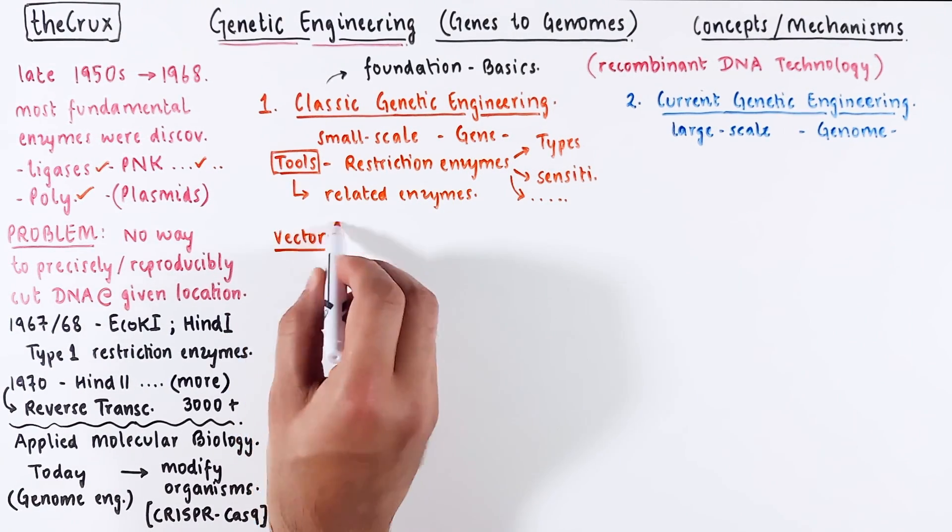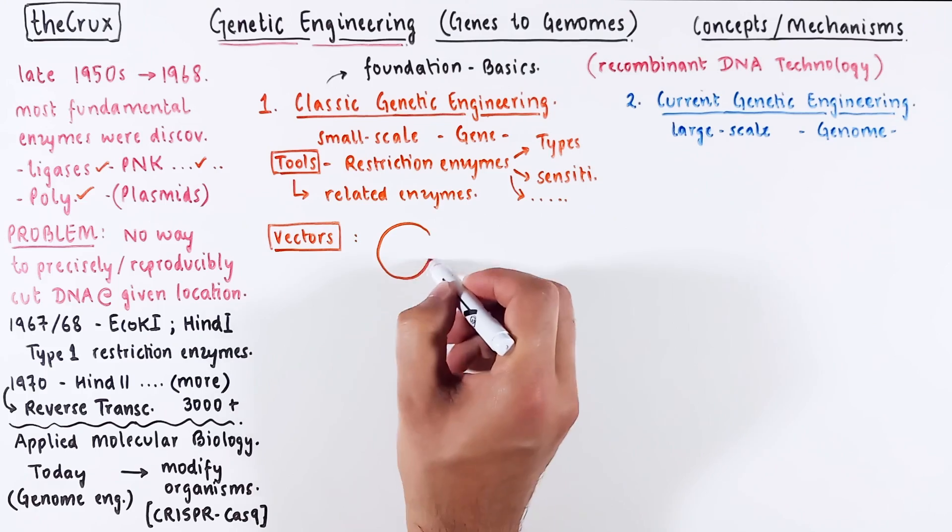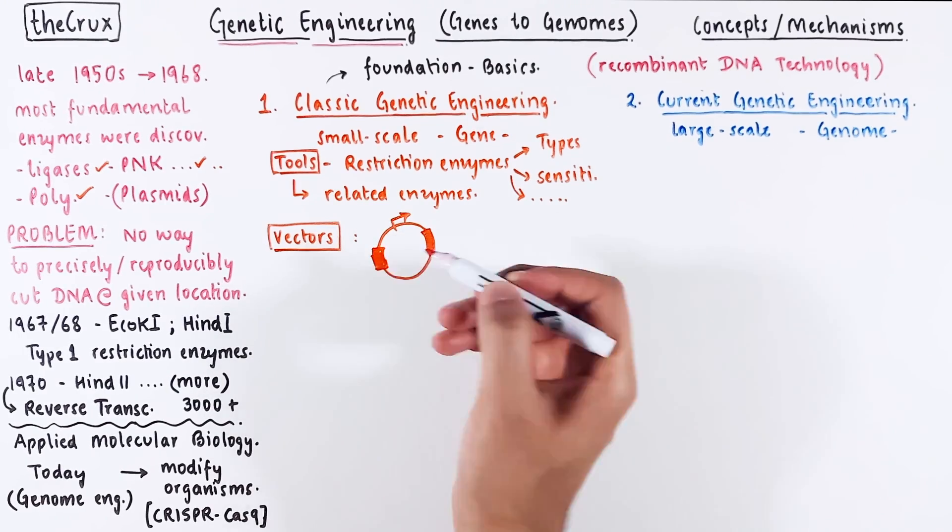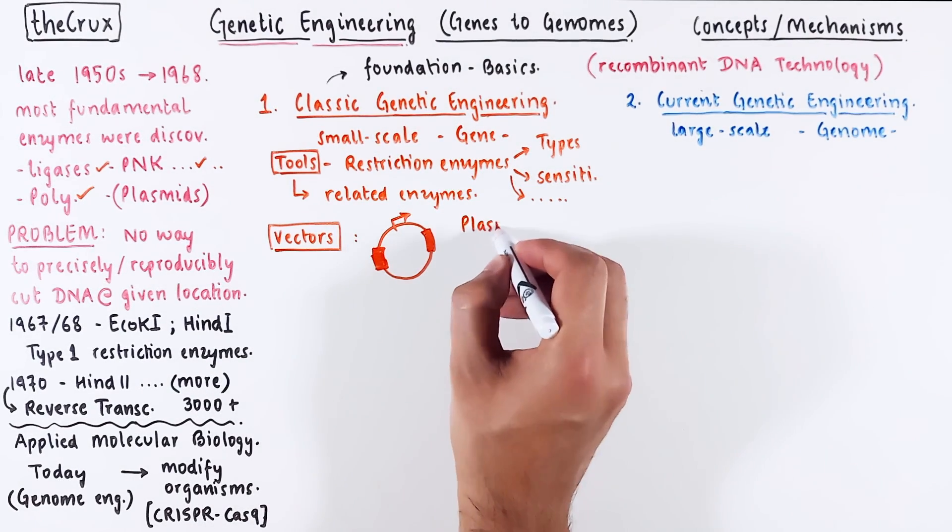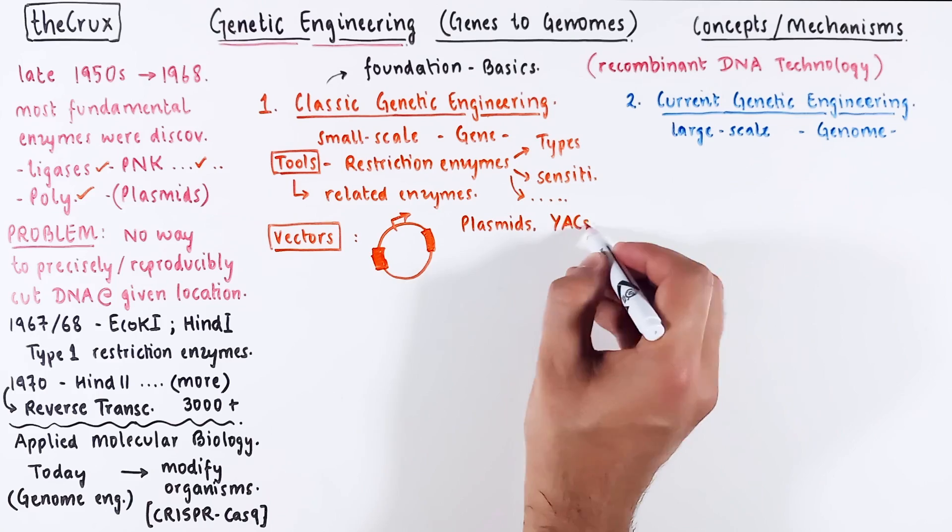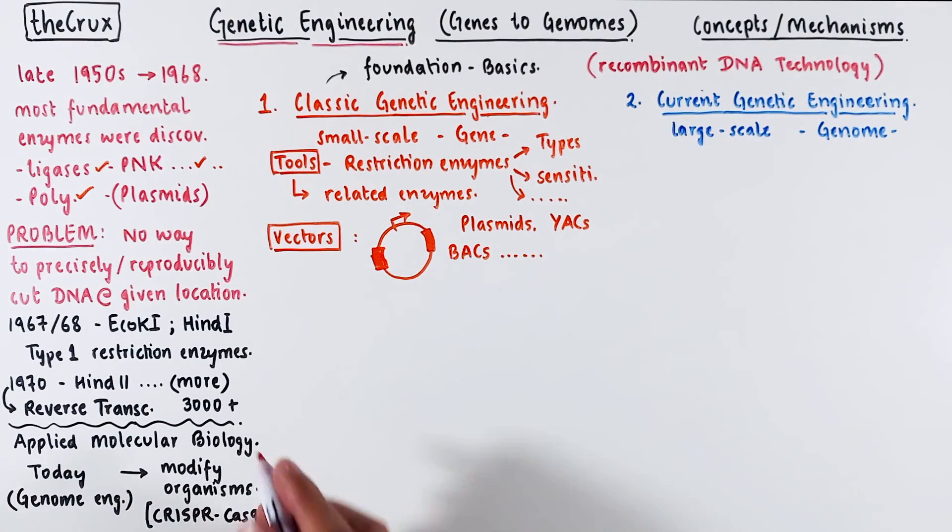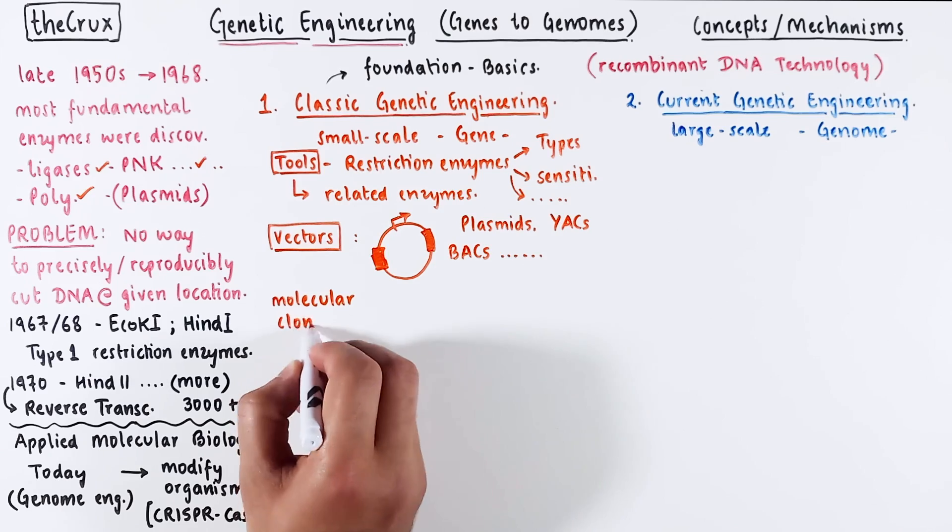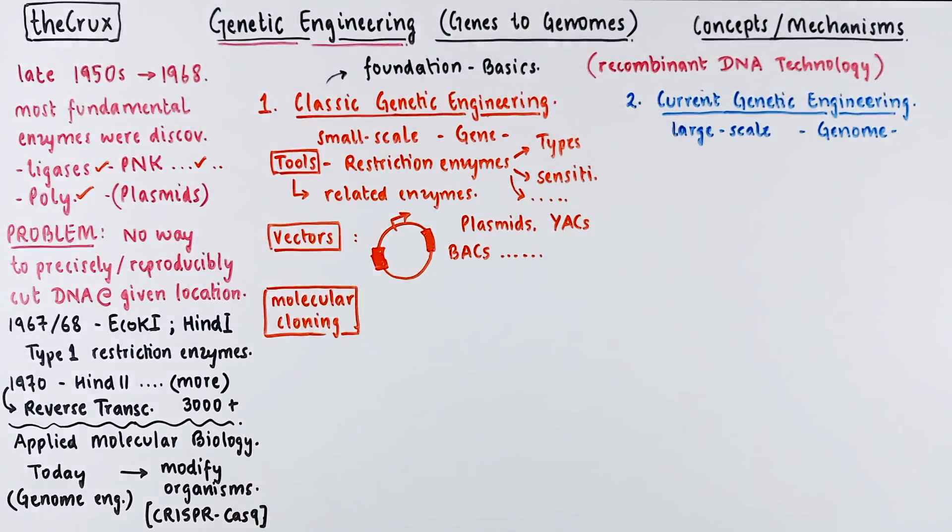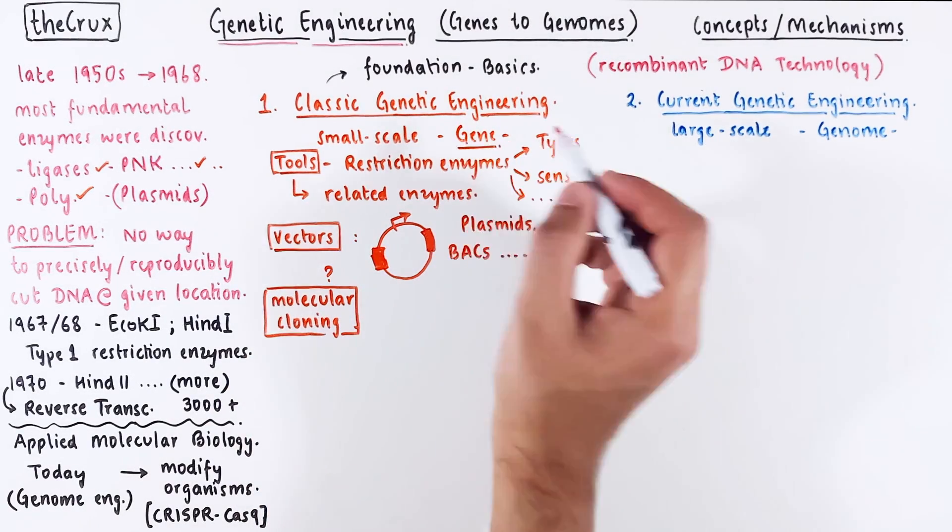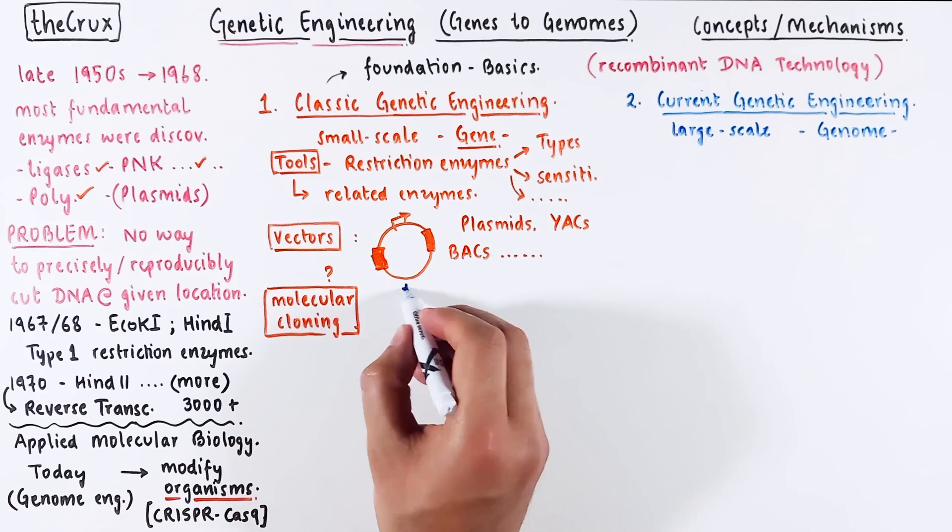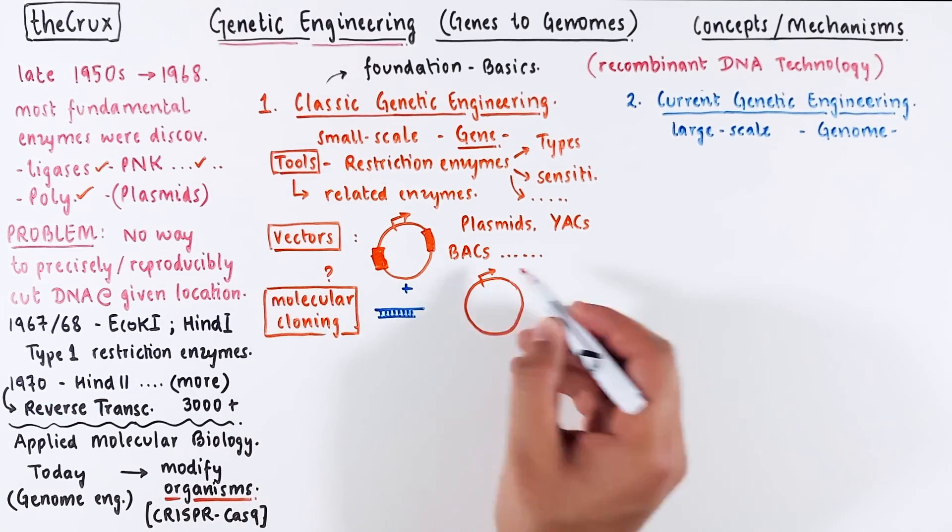Our discussion will then shift towards vectors, often represented as these circular things. We will explore plasmids, YACs, BACs, cosmids, phagemids, and other variations. This naturally leads us to the concept of molecular cloning. This is different from organism cloning. Molecular cloning focuses on how to make copies of DNA segments at a molecular and gene level.